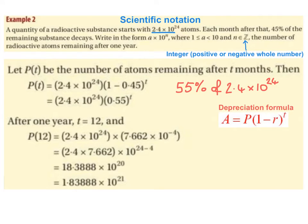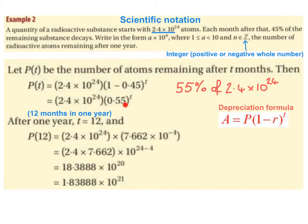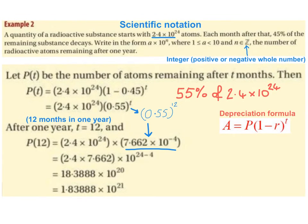After one year, T is equal to 12 because there are 12 months in a year. So P of 12 equals 2.4 times 10 to the power of 24, multiplied by 0.55 to the power of 12. Computing 0.55 raised to the power of 12 gives us 7.662 times 10 to the power of minus 4, rounded to three decimal places.